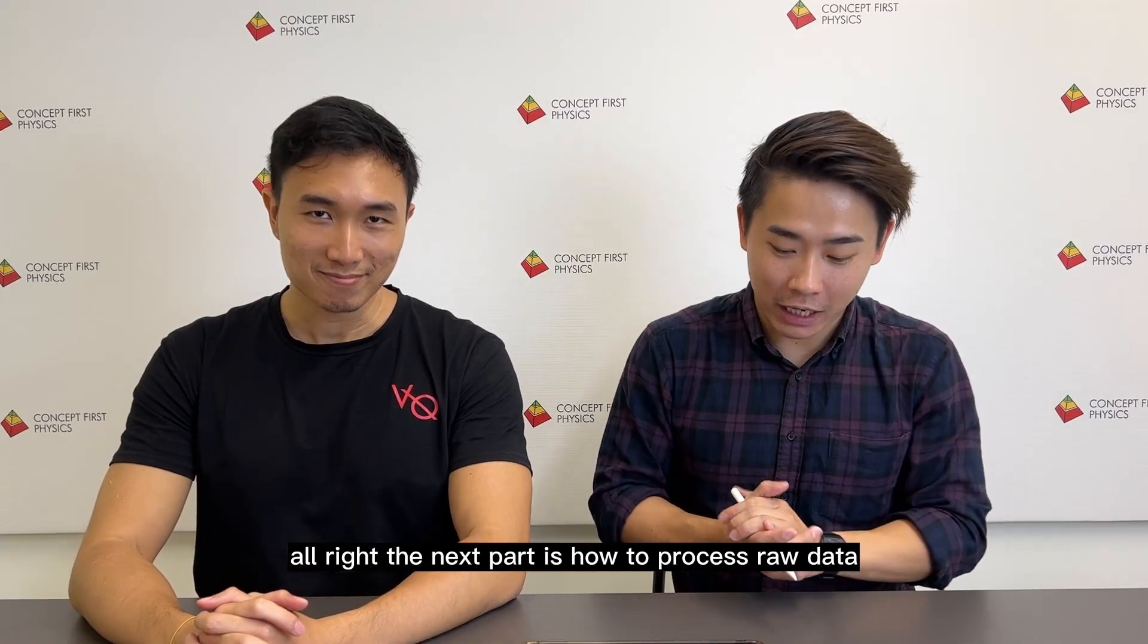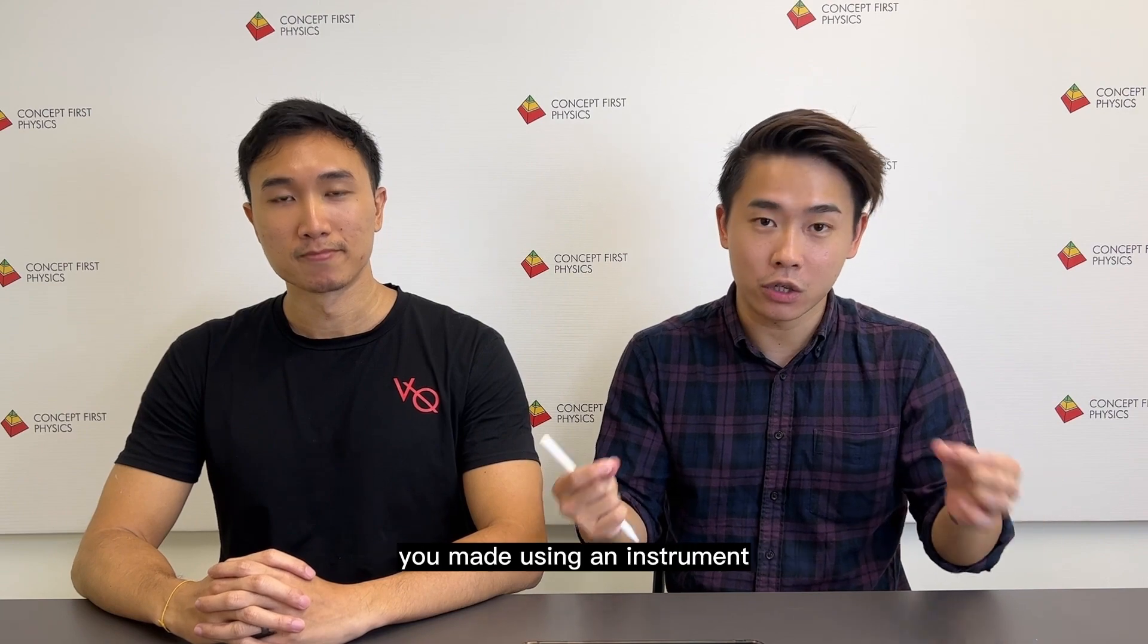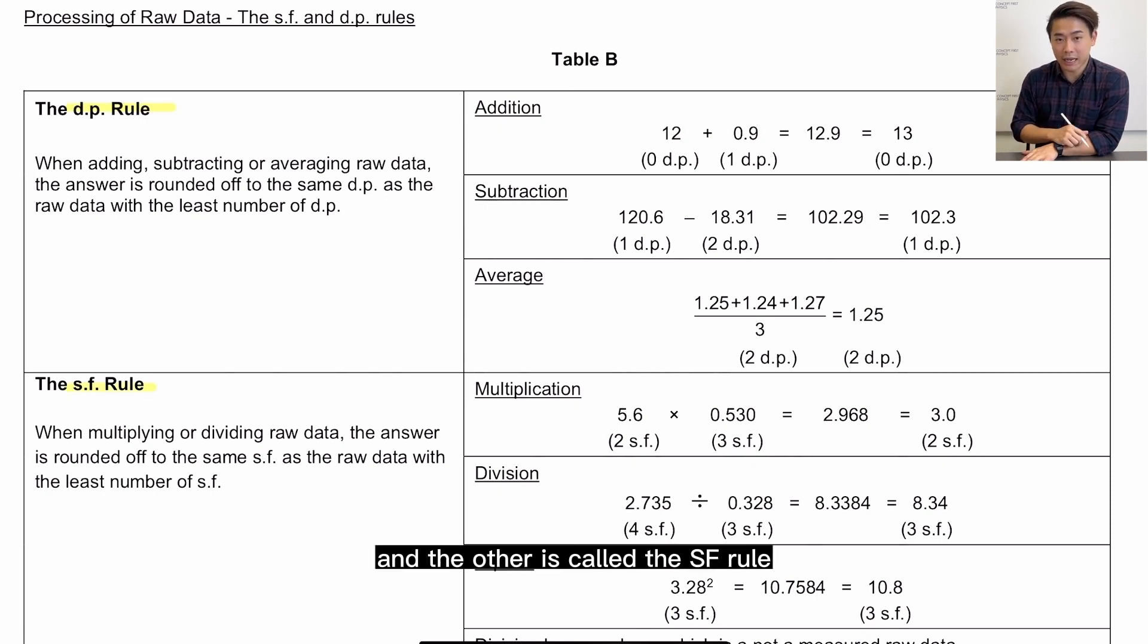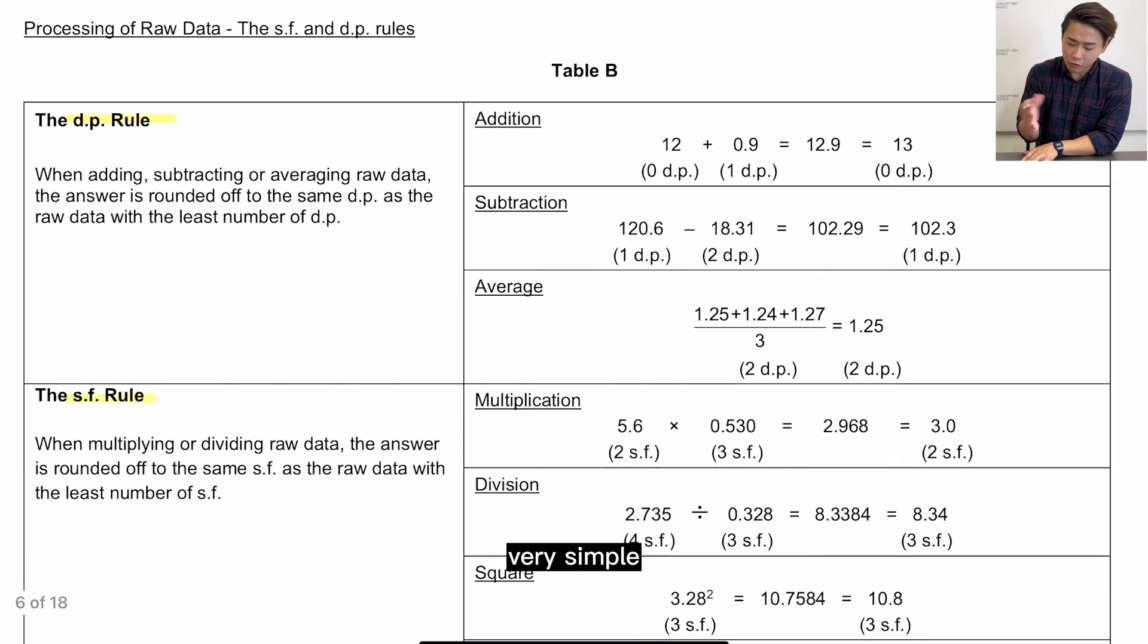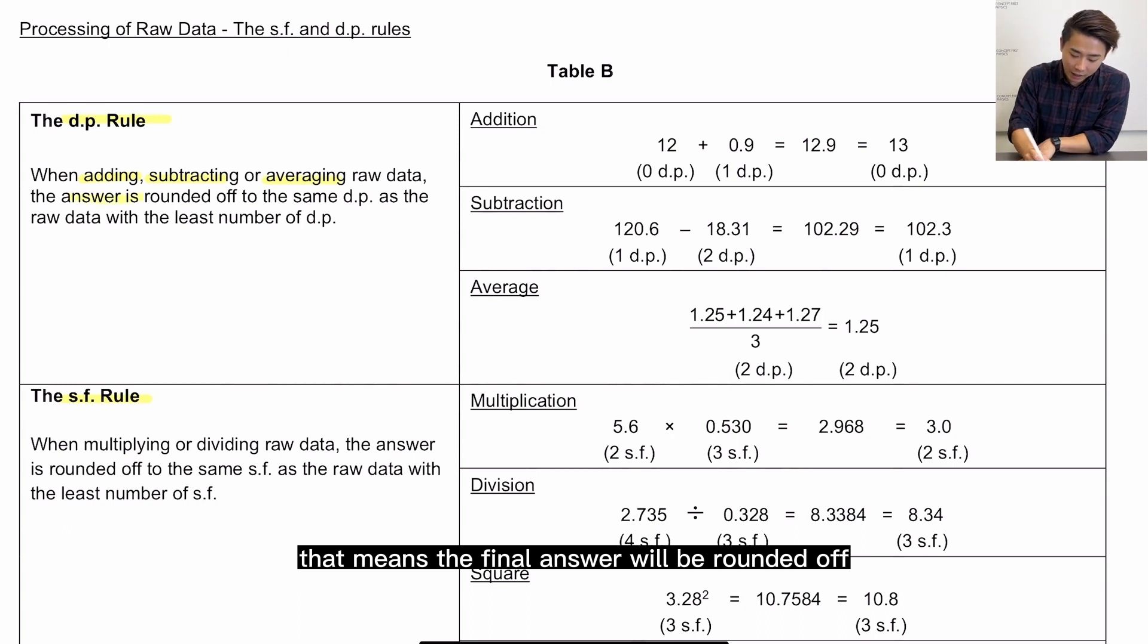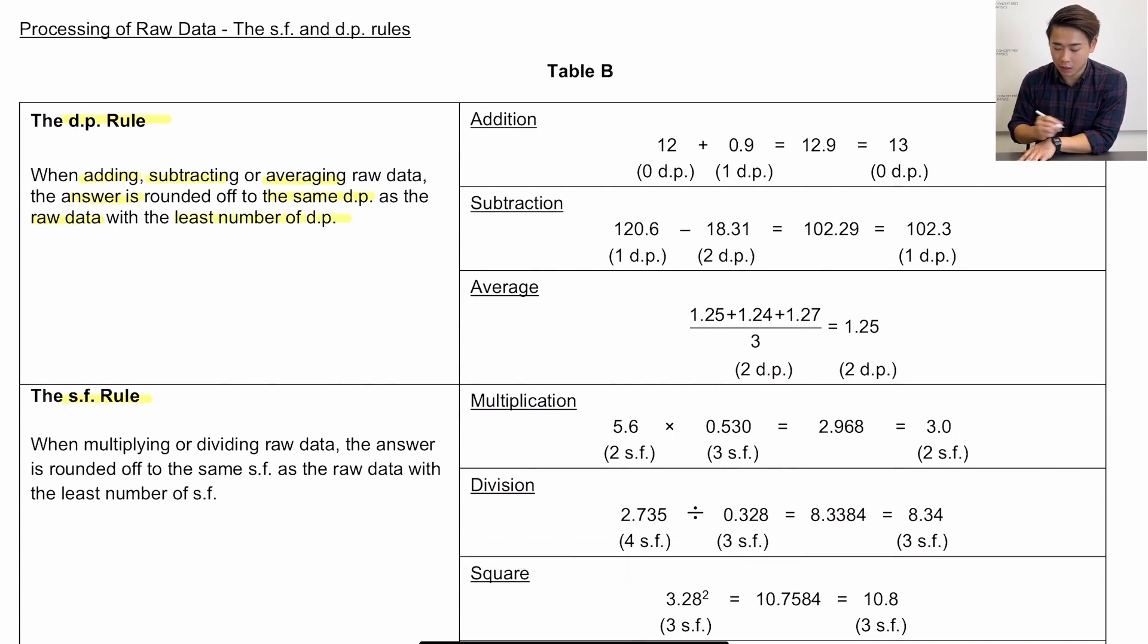Alright, the next part is how to process raw data. Now to process raw data means to calculate, and raw data means any value or any measurement you make using an instrument. So there are two things that we follow in general. Number one is called your DP rule, and the other is called the SF rule. Now for DP rule, very simple, you use it when you're adding, subtracting, or averaging raw data. That means the final answer will be rounded off to the same decimal points or places as the raw data with the least number of DP. So examples are given here: addition, subtraction, and average. Let's just look at one. So for subtraction, let's say you have one DP on the first term minus another raw data or measured value with two DP, then your final answer has to follow the one with the least DP, so it will end up with one DP.